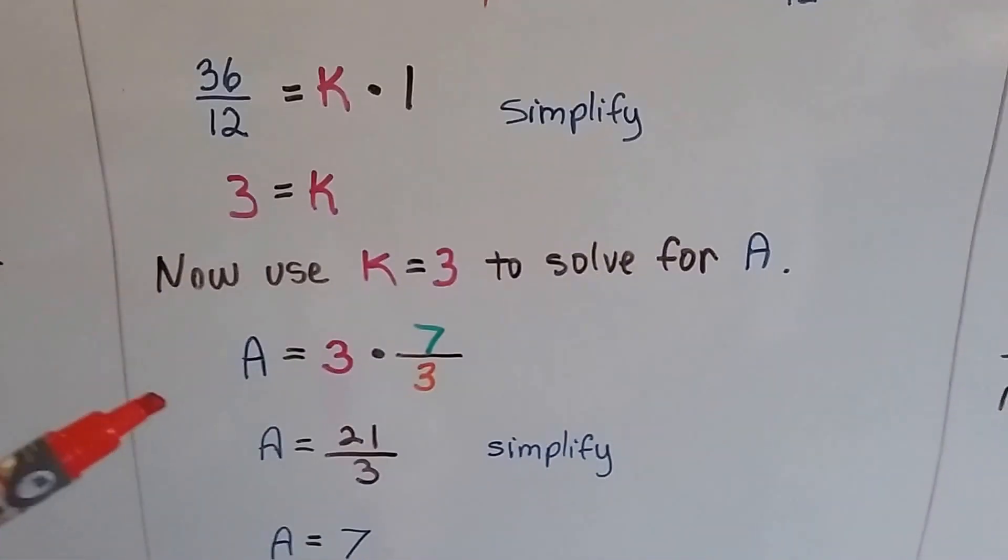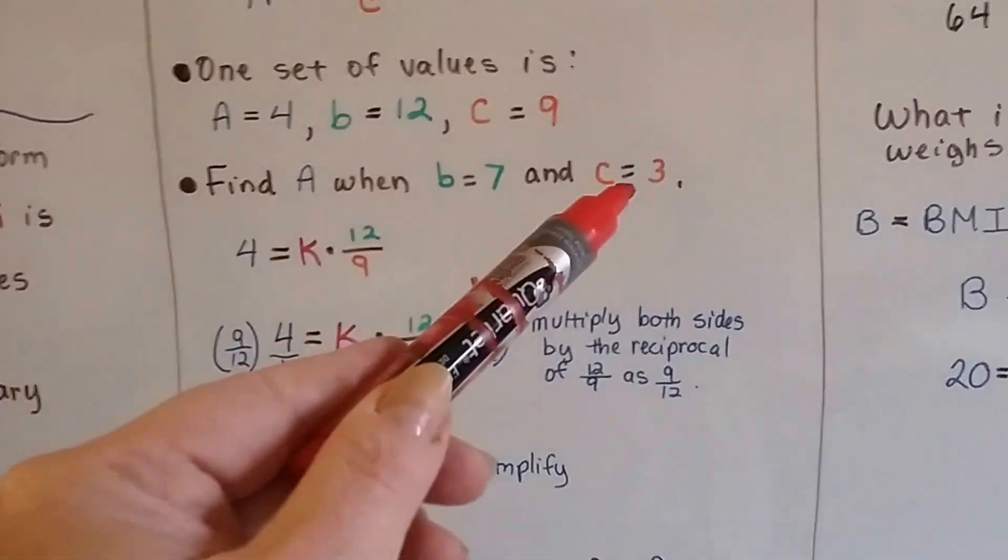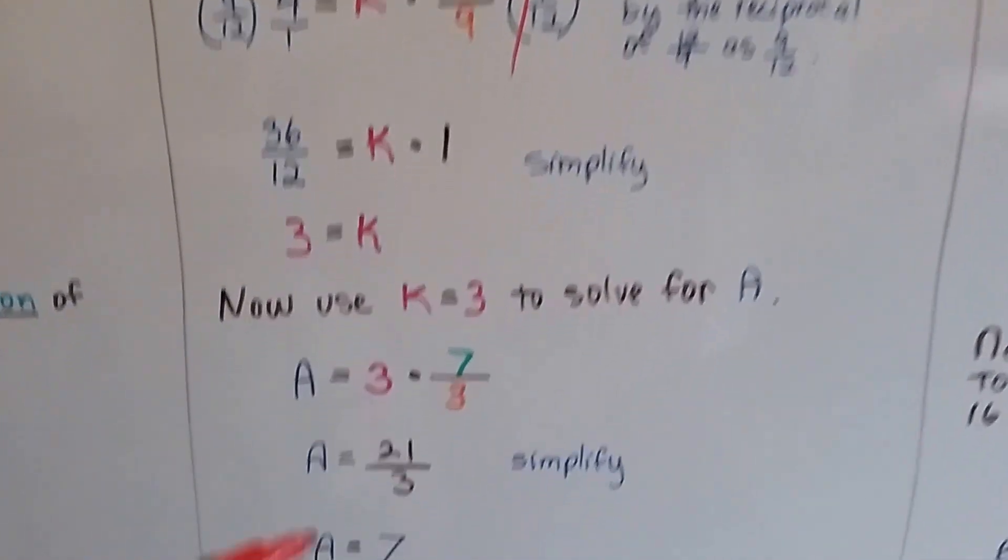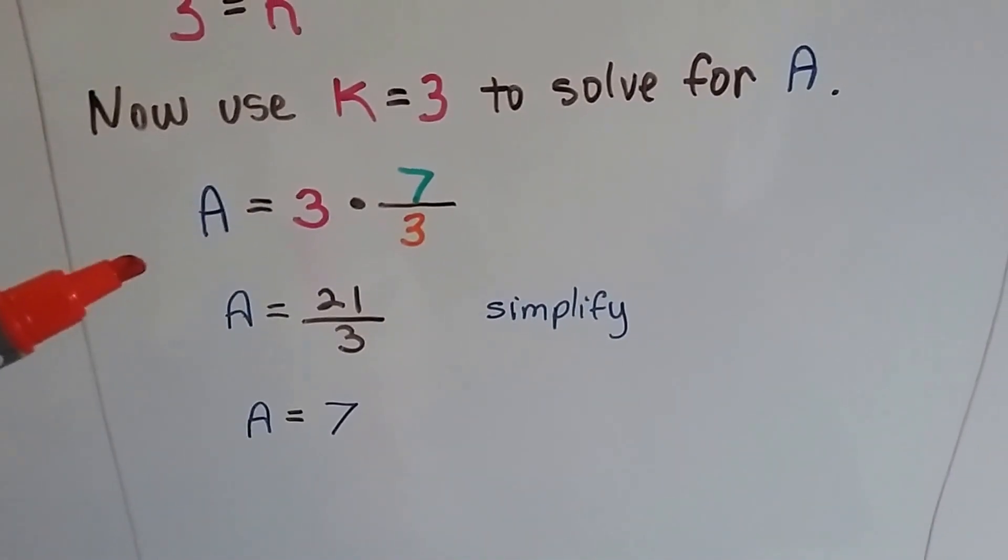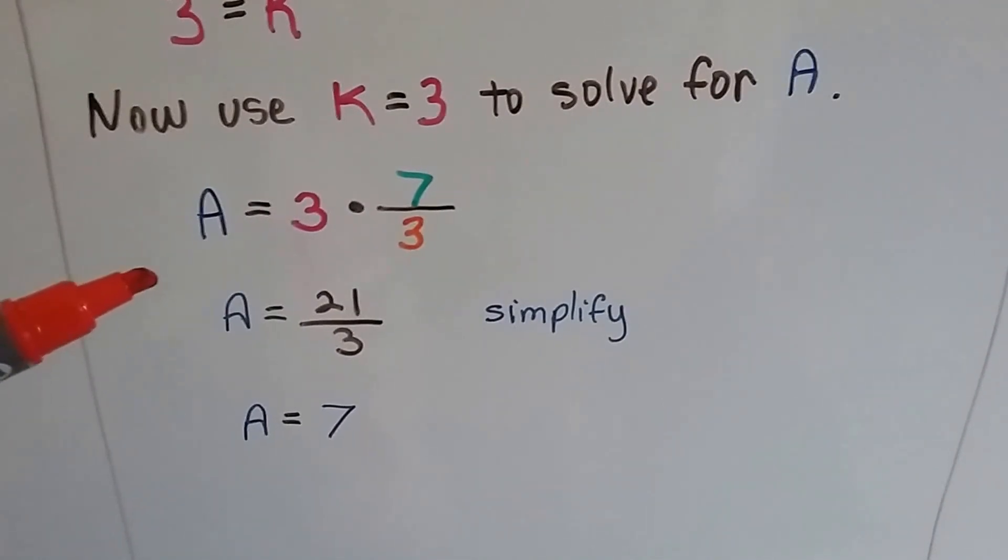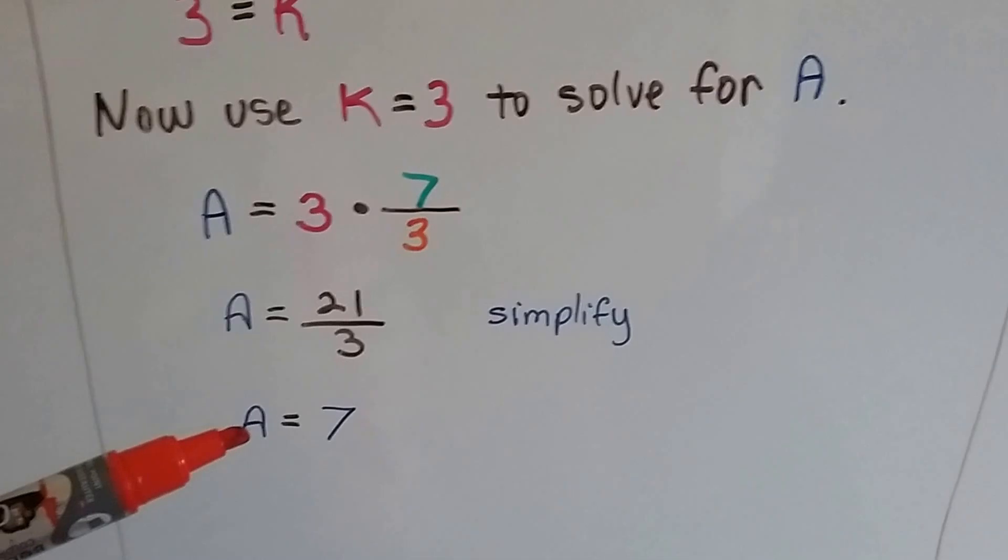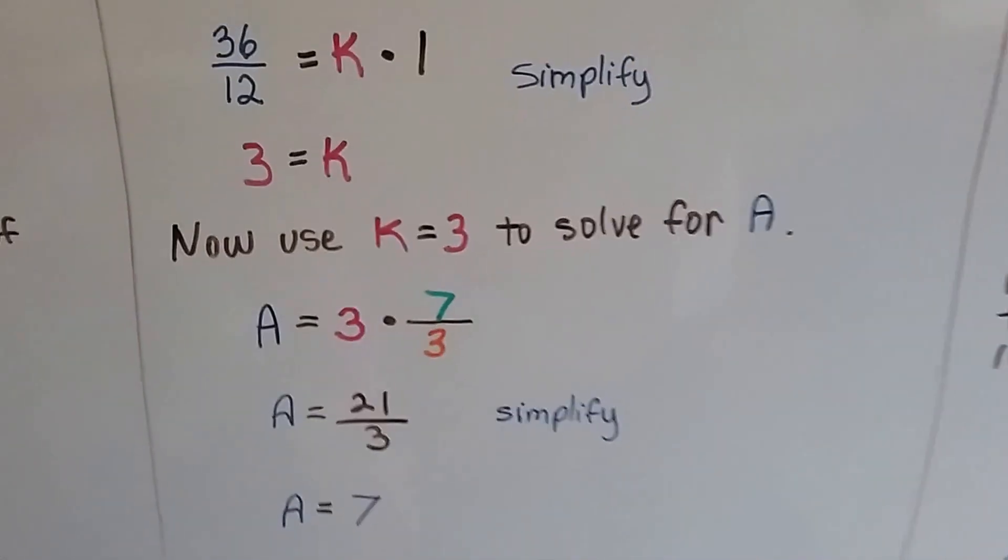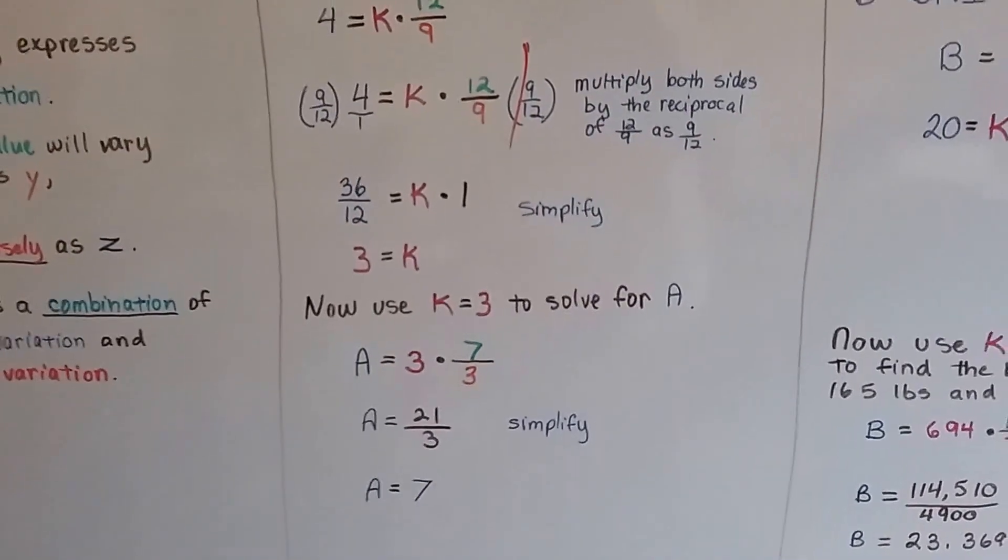We can use that to solve for a for our second set of values, for a when b is 7 and c is 3. We plug those into the equation and we get a equals 3 times 7 over 3. That means a equals 21 over 3, so a equals 7. It was using direct and inverse variation.